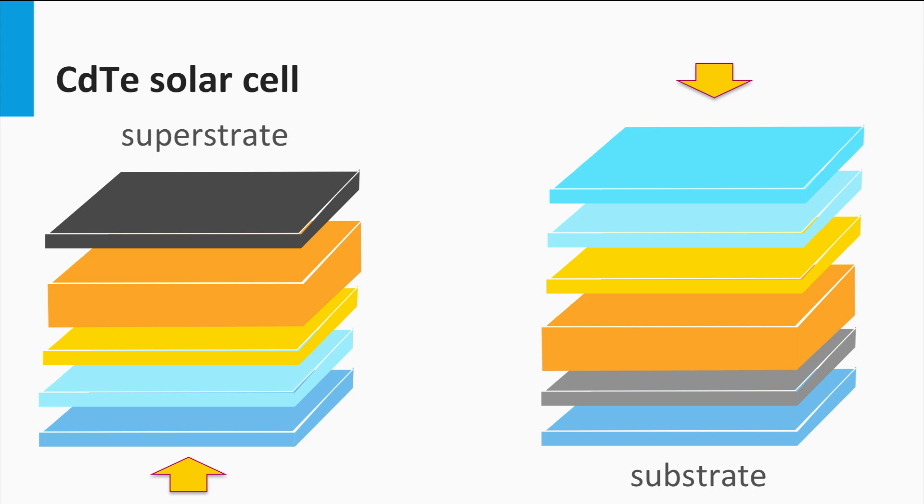Compare this to for instance the thin film silicon we discussed earlier. A P-I-N junction is considered as a superstrate configuration, whereas an N-I-P junction is a substrate configuration.